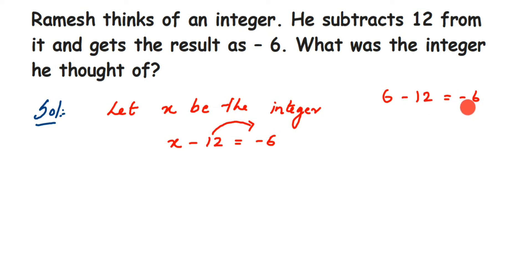If you don't want to solve logically, you can solve this in equation form. I'm going to transpose this -12 to the other side. So x will be equal to -6, and when transposing a negative number to the other side, it becomes positive, so it will become +12.